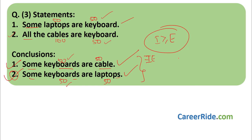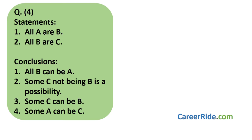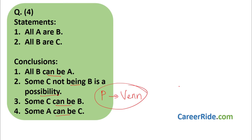Moving to the next question. We check for the words like 'can be' — and we find 'can be' in the conclusions. So this is a possibility sum and we have to solve it using Venn diagrams. We have not yet seen how to solve a sum using Venn diagrams, so now I will teach you how to solve possibility sums using Venn diagrams. What we need to do is draw all the possible Venn diagrams for the given set of statements.